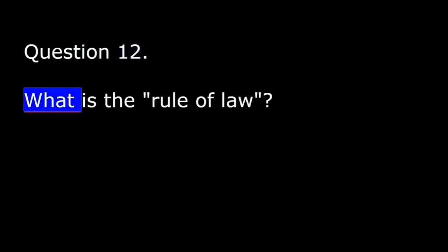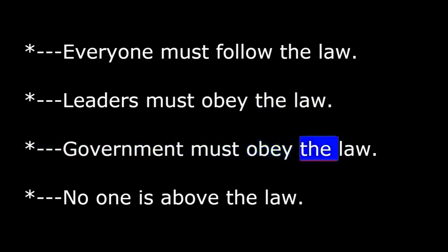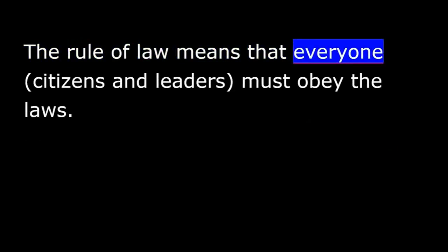Question 12. What is the rule of law? Everyone must follow the law. Leaders must obey the law. Government must obey the law. No one is above the law. John Adams was one of the founding fathers and the second president of the United States. He wrote that our country is a government of laws and not of men. No person or group is above the law. The rule of law means that everyone — citizens and leaders — must obey the laws.